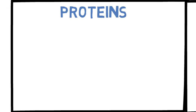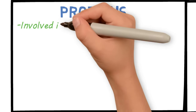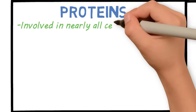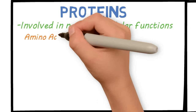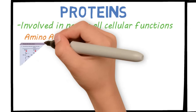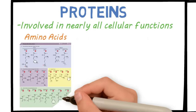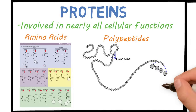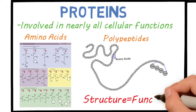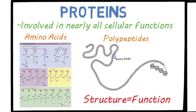Then you have proteins. Proteins are involved in nearly all cellular functions and are a major part of all living organisms. Their monomers are called amino acids, and there are 20 different amino acids. Their polymers are called polypeptides. You bind amino acids together to get polypeptides, and the protein structure results from folding, which determines the function.